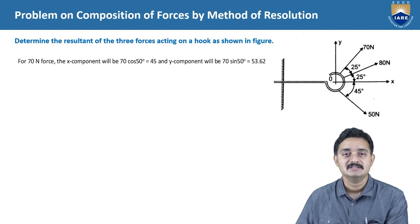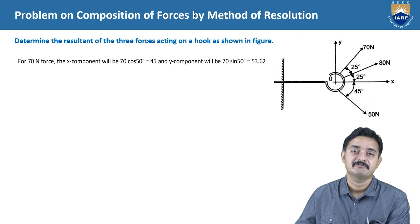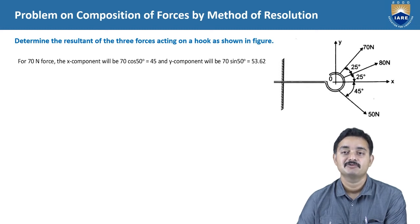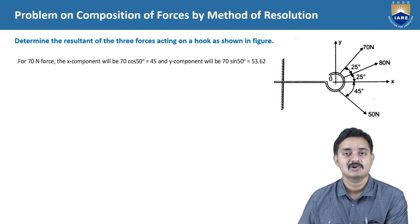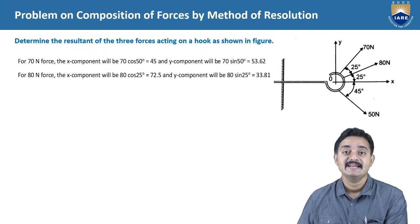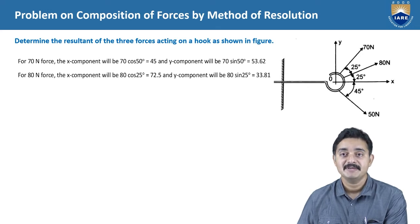For the 70 N force, the x-component will be 70 cos 50 degrees, that is equal to 45. When you solve 70 cos 50, you will obtain the value as 40. And the y-component will be 70 sin 50, that would be 53.62. These are the x-component and y-component of the 70 N force. For the 80 N force, the x-component will be 80 cos 25, that is equal to 72.5, and the y-component will be 80 sin 25, which is 33.81.